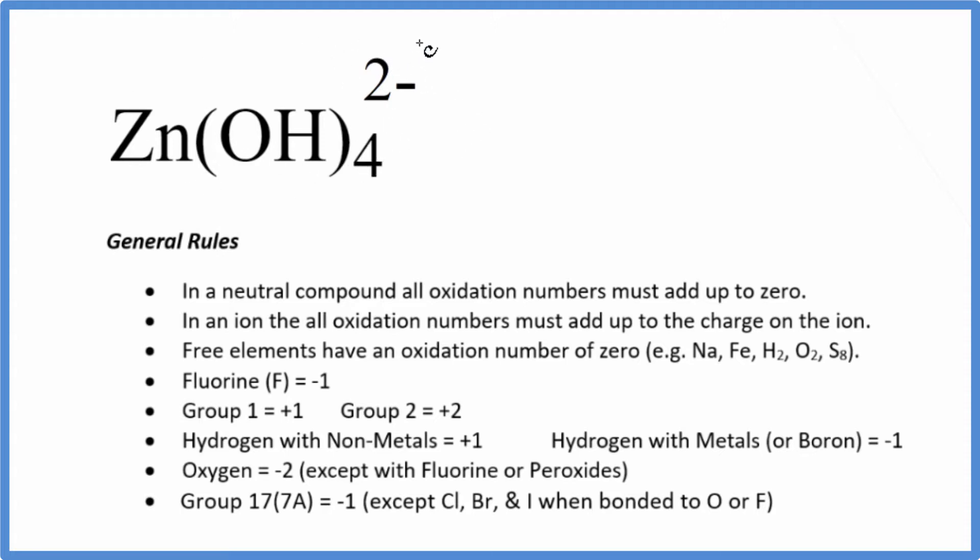So to do this, we need to recognize that this 2 minus indicates we have an ion here, and all the oxidation numbers in an ion add up to the charge on the ion. So all the oxidation numbers here are going to add up to that 2 minus.